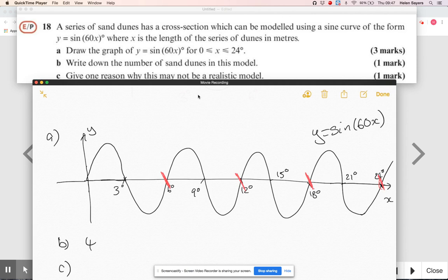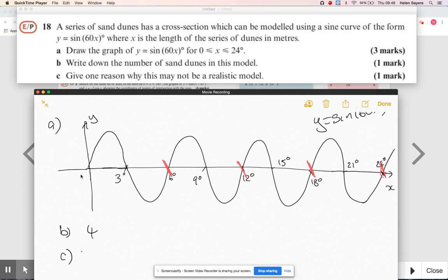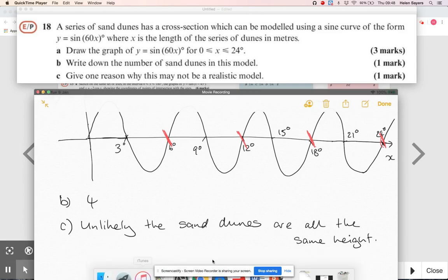And then c, give one reason why this model may not be realistic. Yeah, they ask that quite a lot in these real life questions whether they're trig or whatever they're about. I mean that looks like a lovely neat set of sand dunes but I imagine in real life that's highly unlikely. So I think it's unlikely the sand dunes are all the same height. It's just unlikely they're all exactly the same as each other. Doesn't mean it's a bad model as long as they're not way off, but yeah, it's unlikely that they look exactly like that.